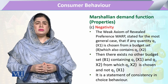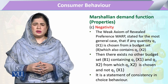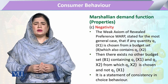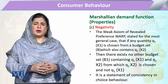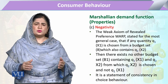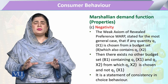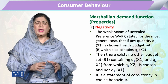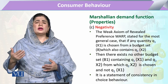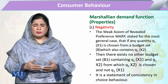The third property is negativity. What we mean by negativity is that if there is a budget constraint that enables the consumer to purchase a bundle x1, and at the same time the consumer has bundles x1 and x2 or q1 and q2, but that budget makes it possible to purchase quantity x1, then there will be no other bundle or budget constraint that enables him to purchase quantity x2.